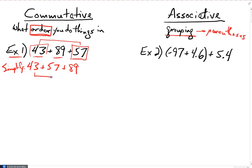Now I can add 43 and 57 and get 100. Now I've got 100 plus 89, and 100 plus 89 is 189. So I just used the commutative property of addition. That is, I changed the order in which I added these three numbers. I used the commutative property of addition in order to simplify my expression, to make it easier to evaluate that expression.